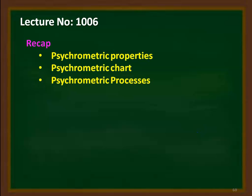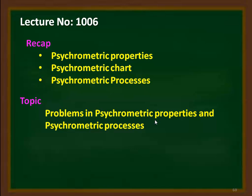We recap from the previous lecture. In the previous lecture, we discussed about the psychrometric properties and the psychrometric chart. The psychrometric chart is used to determine psychrometric properties like specific humidity, relative humidity, dry bulb temperature, wet bulb temperature, dew point temperature, enthalpy of air and water vapor mixture, and the specific volume of air. We also discussed the psychrometric processes, and in the earlier few lectures we solved problems on psychrometric processes, and we continue.